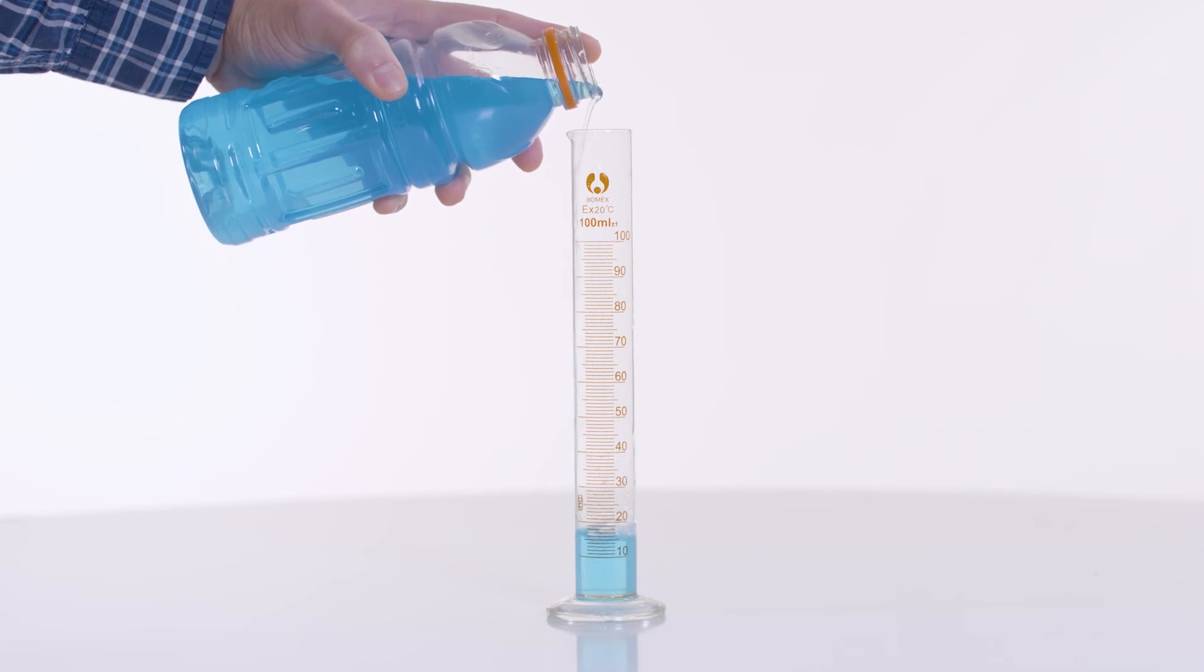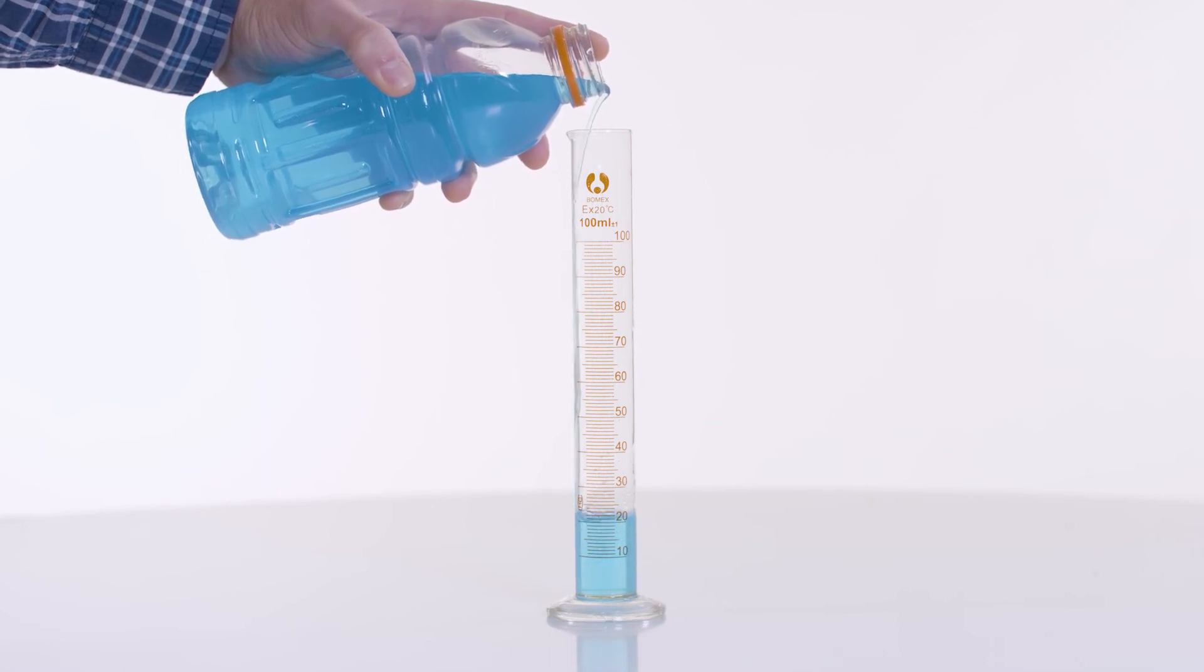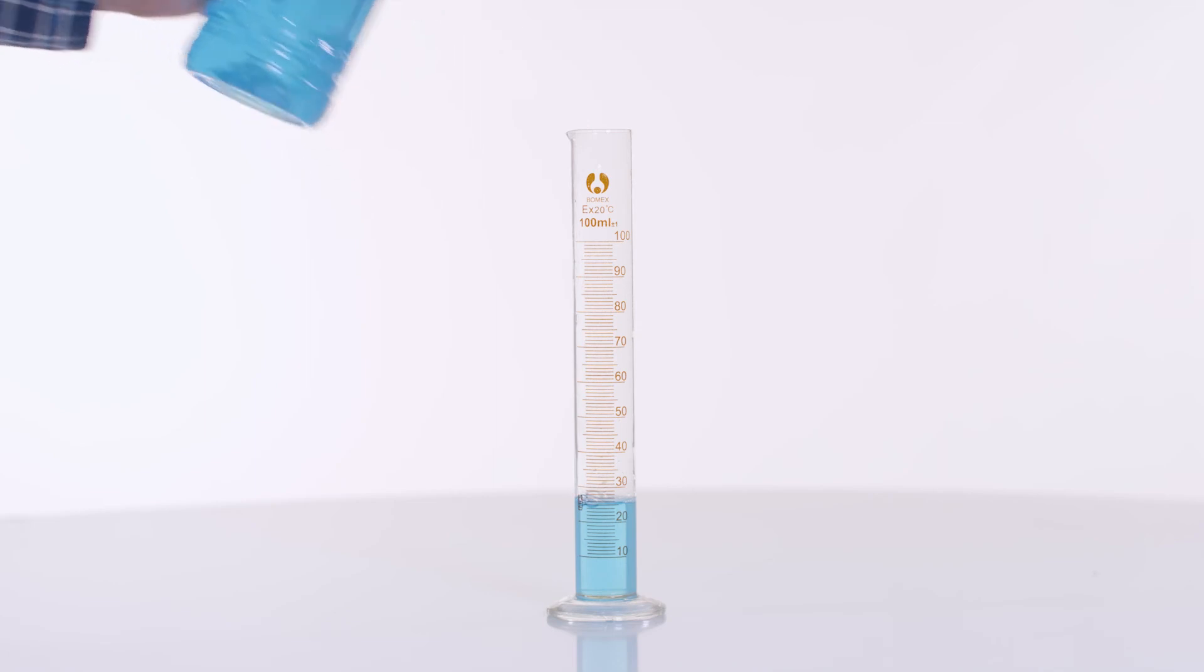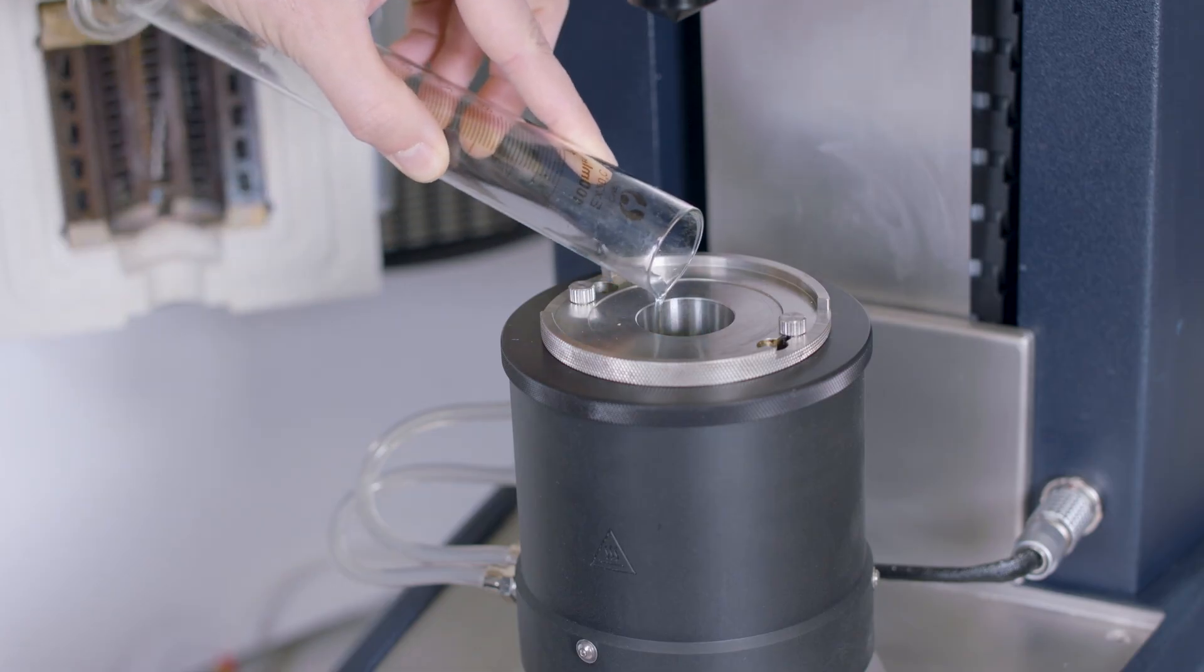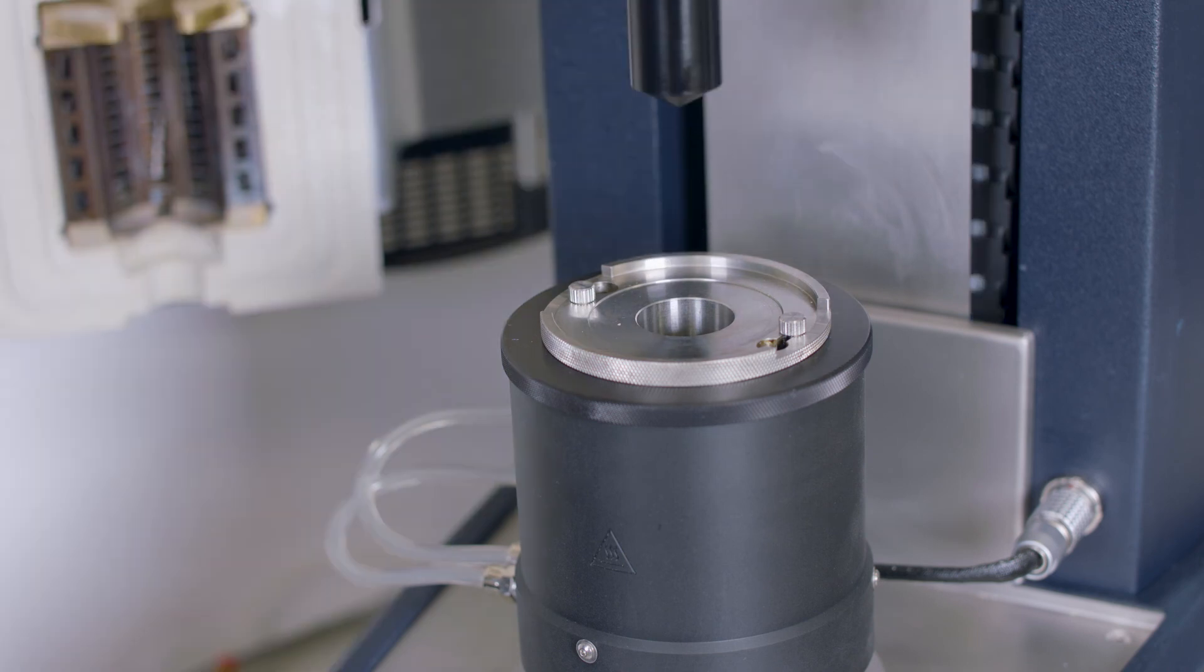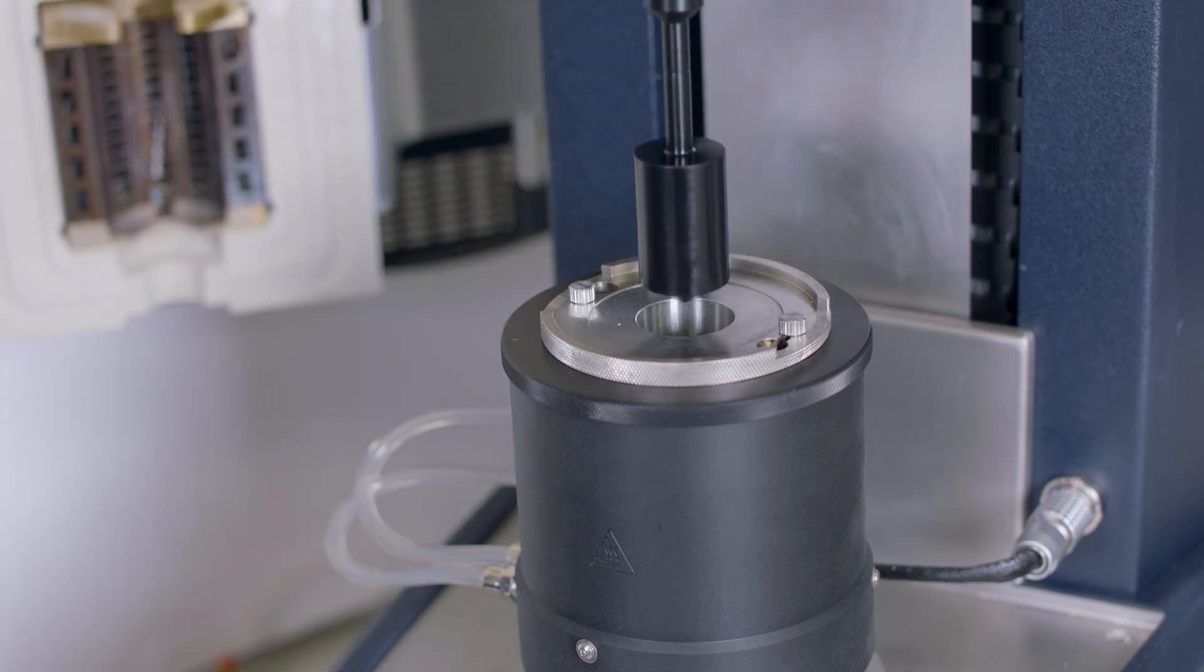To proceed with filling, measure out the desired amount of liquid into a graduated cylinder or pipette. With the upper fixture still at the top, proceed to pour this into the cylindrical cup. Then the gap can be lowered to the operating gap.